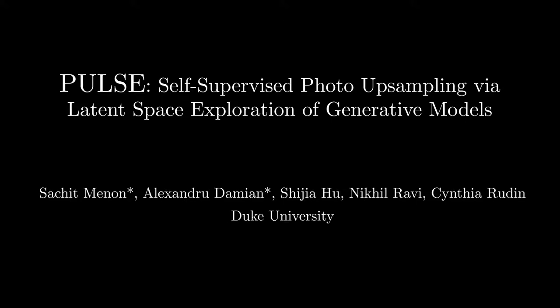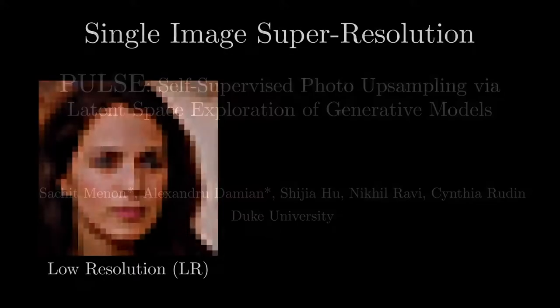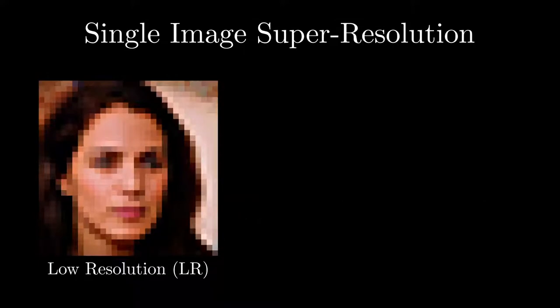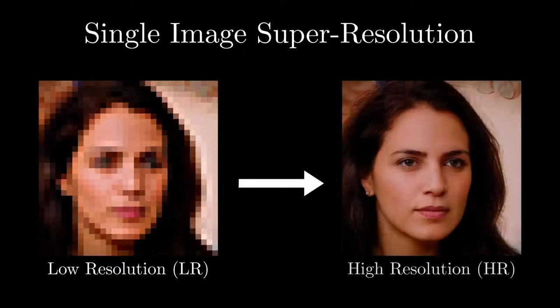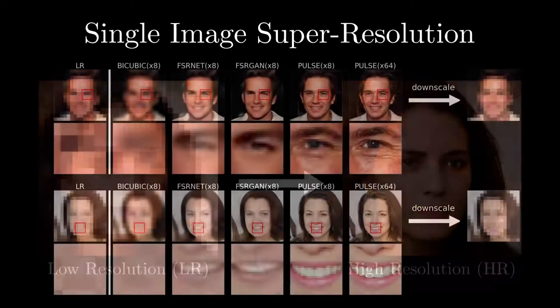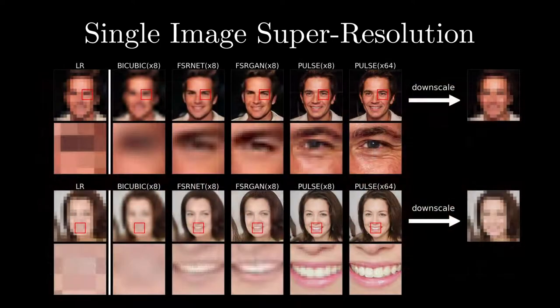Pulse is an algorithm for single image super resolution. The goal of super resolution is to turn a low resolution, or LR image, into a corresponding high resolution, or HR image. Compared to other methods, Pulse produces much sharper and high resolution images.